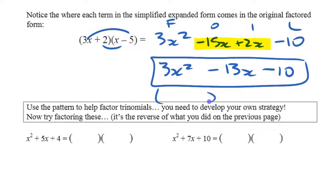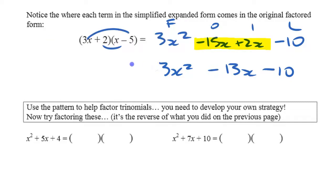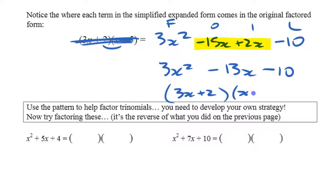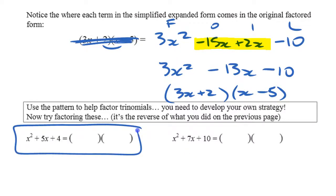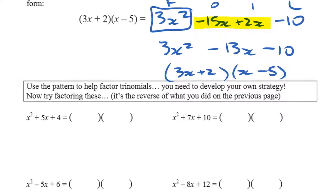When simplified to 3x squared minus 13x minus 10, what we're doing now is taking this and trying to break it back down into two binomials. If we didn't know what it started with, we're trying to write that it equals 3x plus 2 times x minus 5. We'll start where there's no leading coefficient — this one has 3 as a leading coefficient, so we'll begin with simpler cases first.